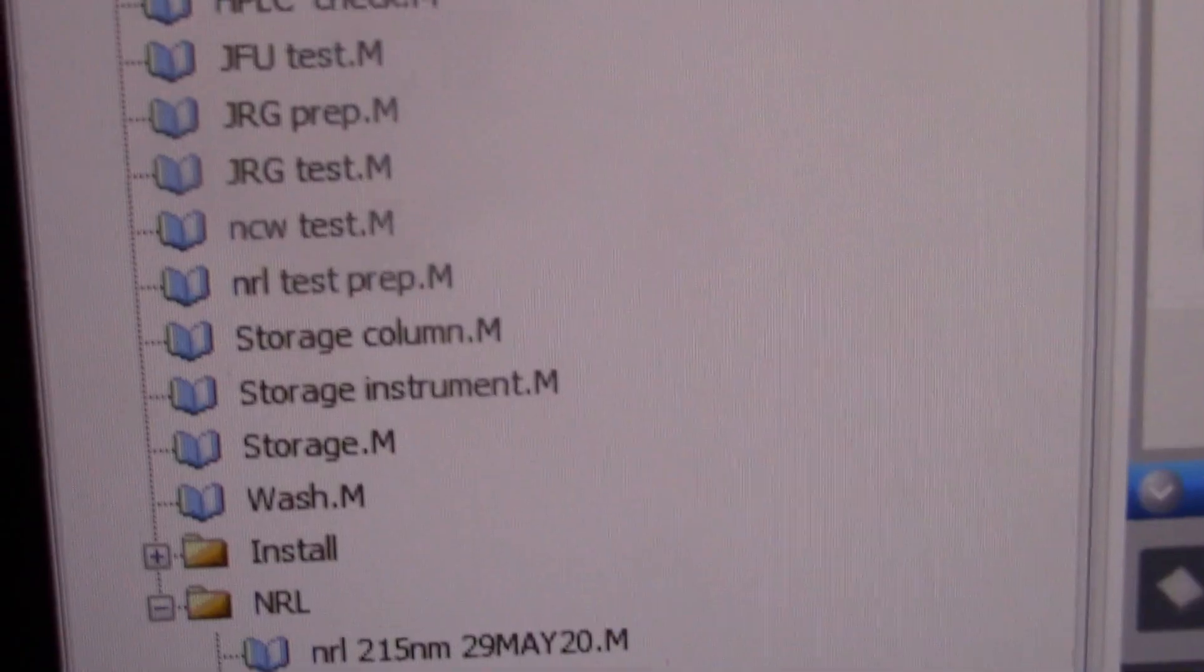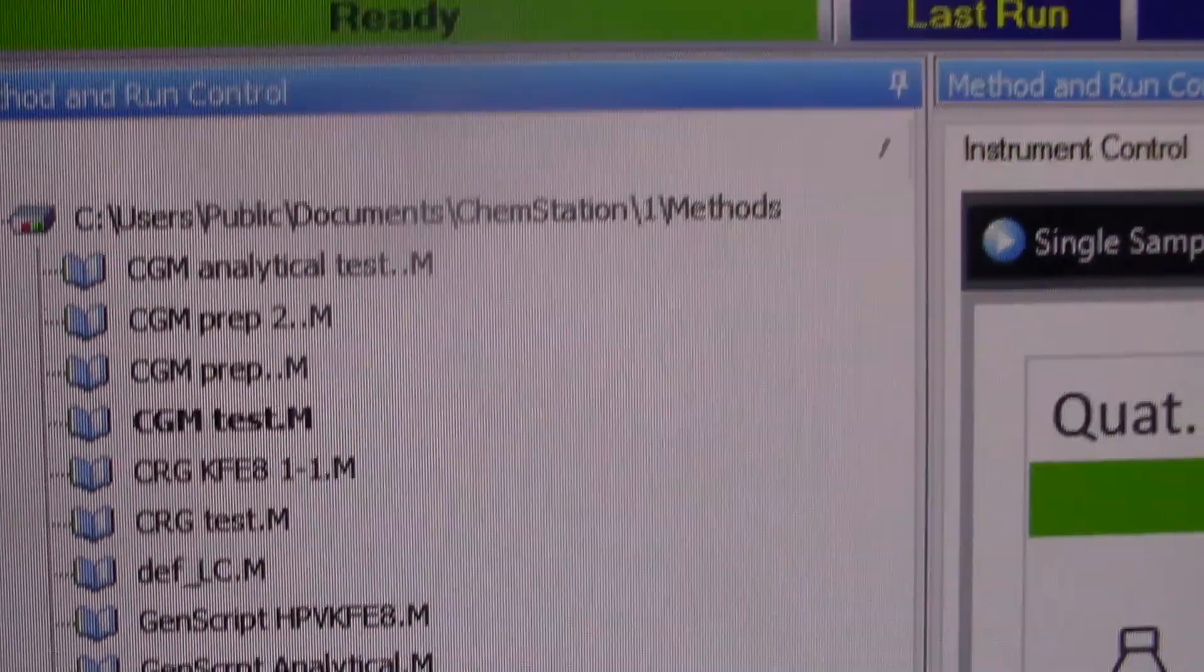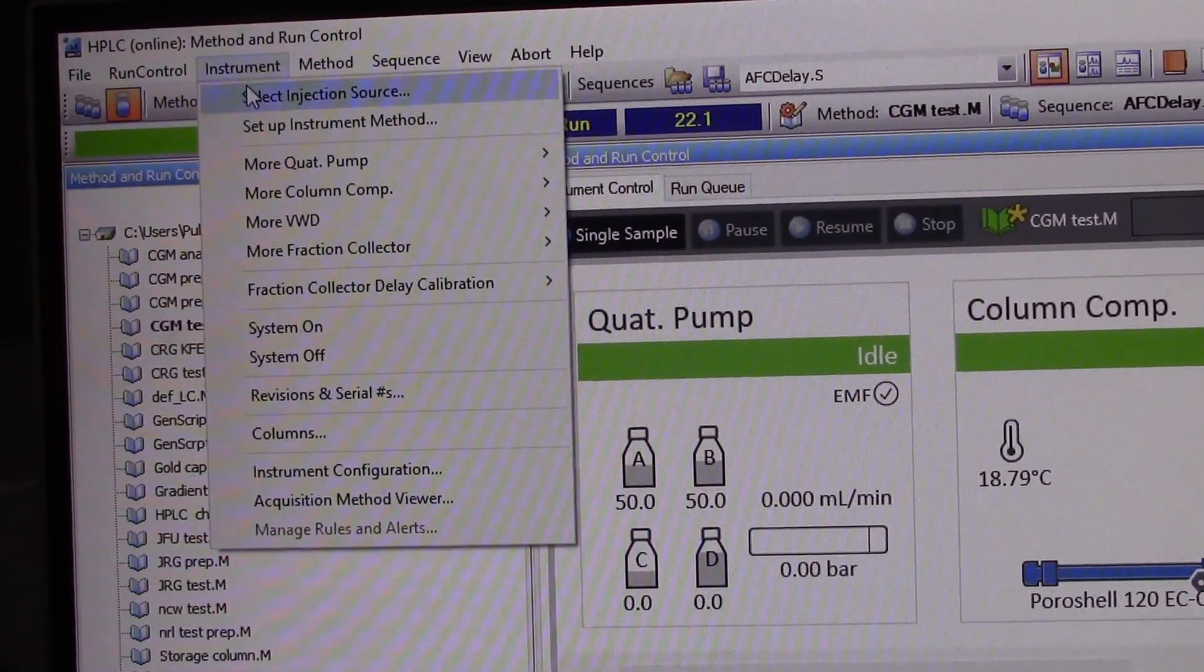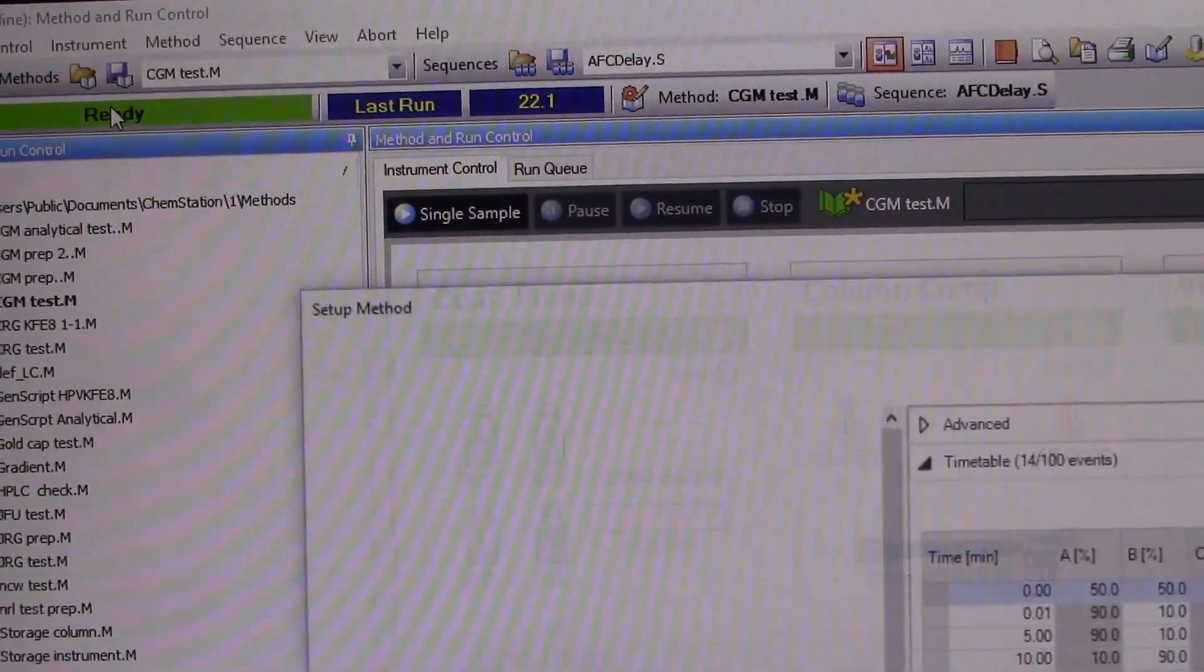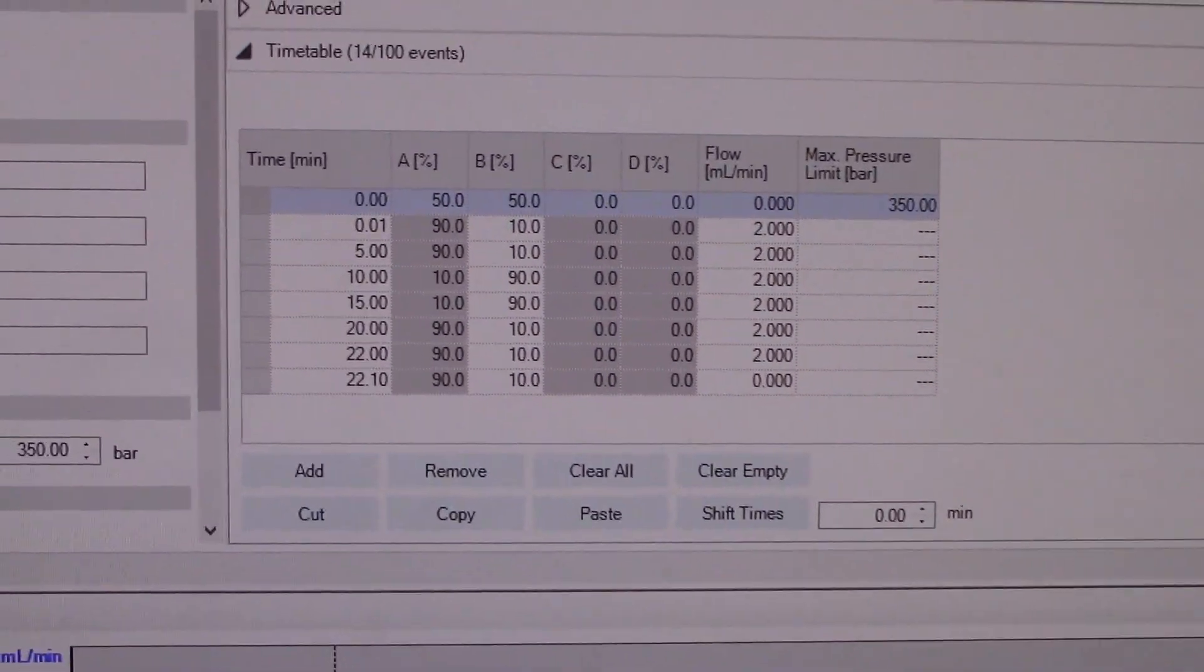The first thing to understand when using the HPLC is knowing how to make a method. Click on instrument, then set up instrument method. The method is like the directions that tell the instrument how much of each solvent to use at a specific time.